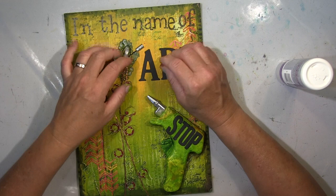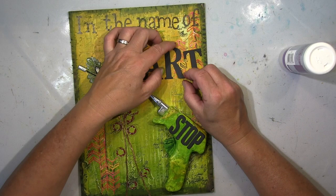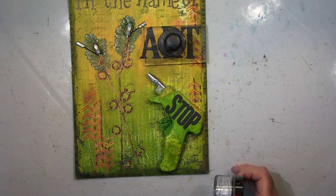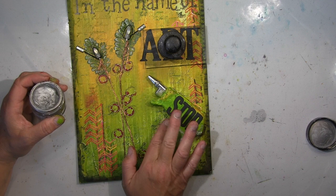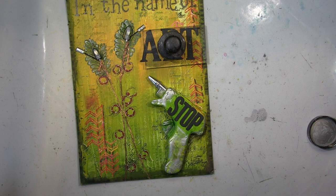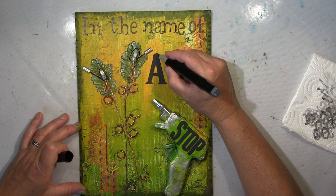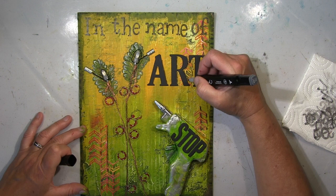We all know the song 'Stop in the Name of Love,' but I changed love to art - it still rhymes with heart. Here a bit of silver with the gilding wax, and some shading around the letters. I think that's basically it.